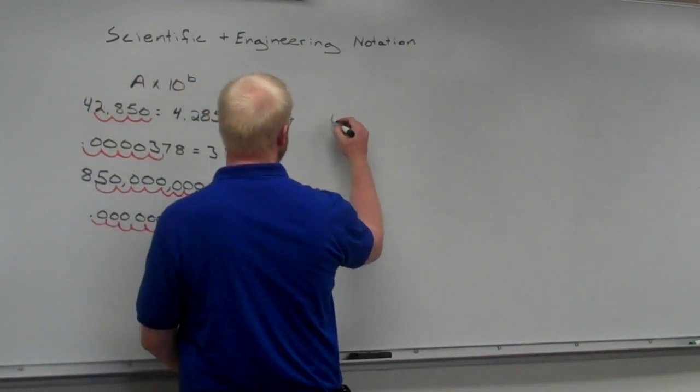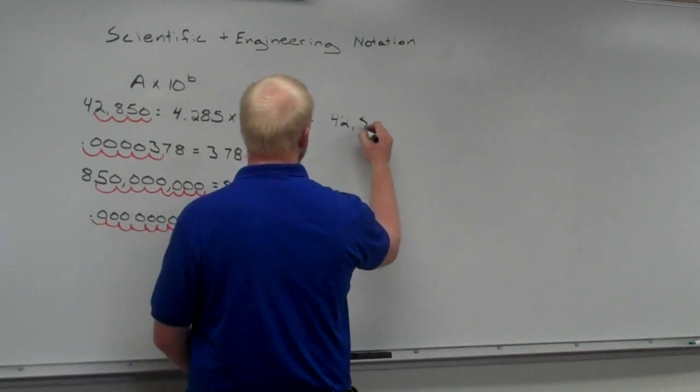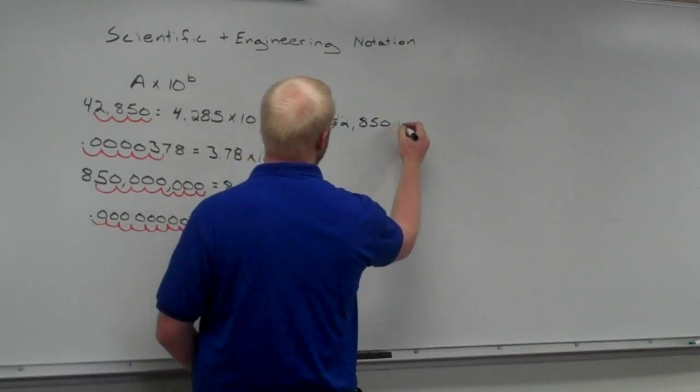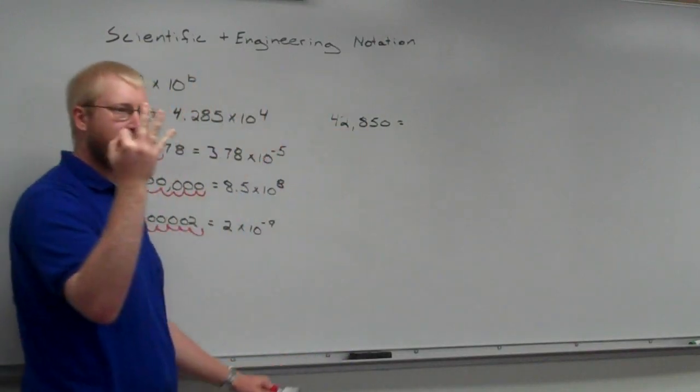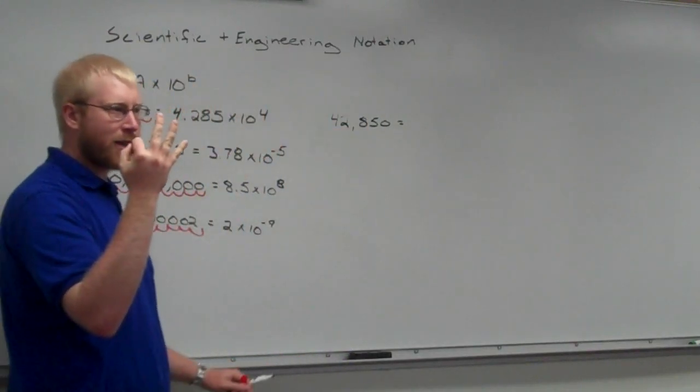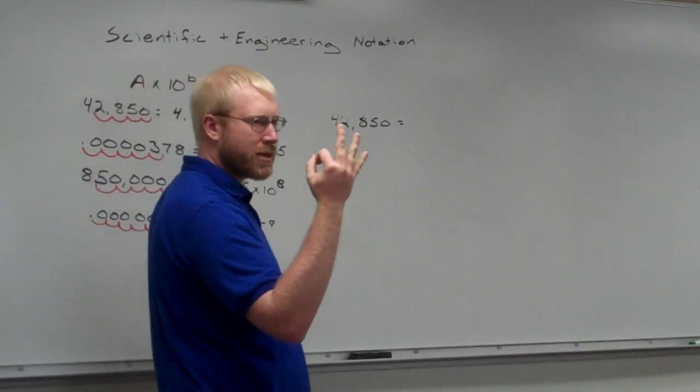So, if I've got the same 42,850, the way that I'm going to go ahead and do that is I'm going to look at it first of all. Since we're dealing with sets of 3, that means in front of our decimal, we can have 1 to 3 numbers. It doesn't matter.